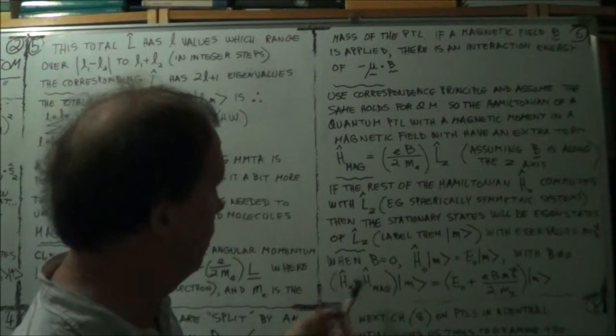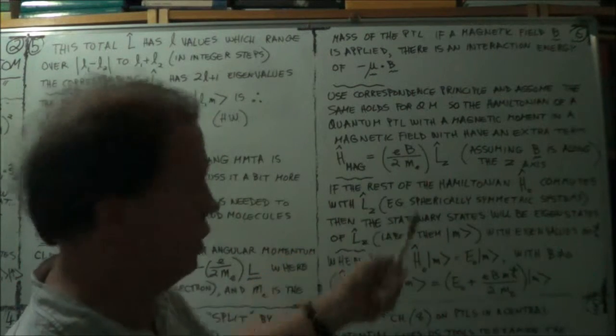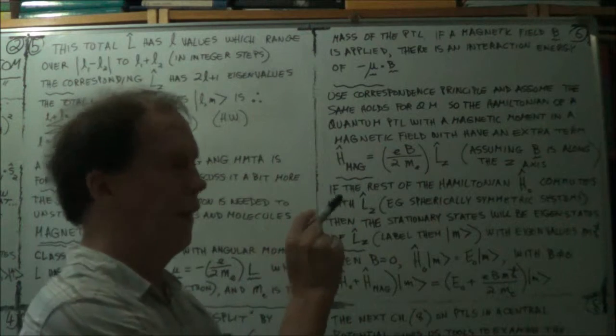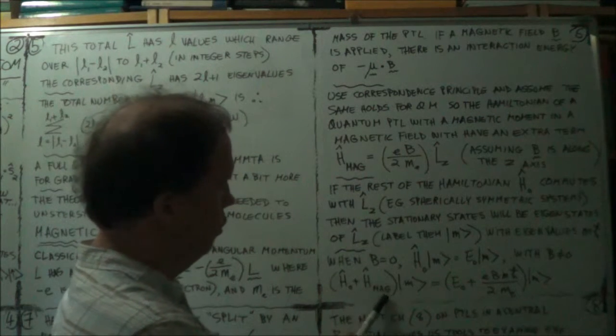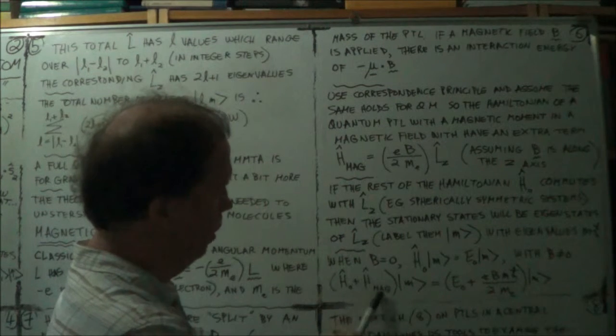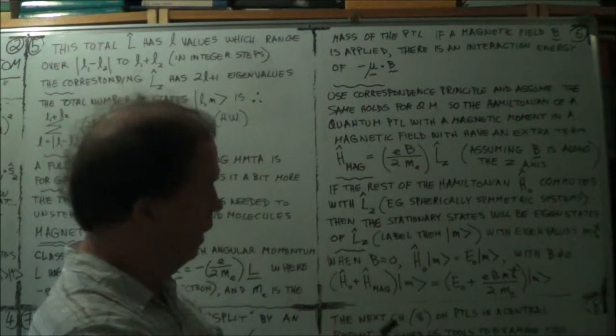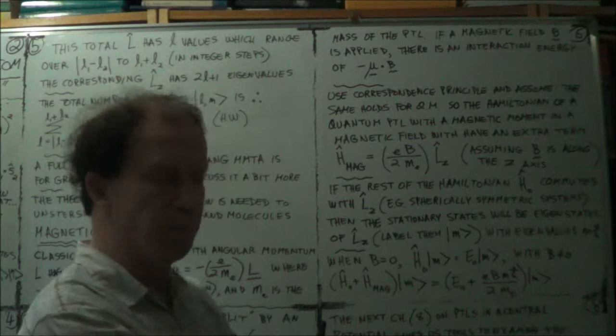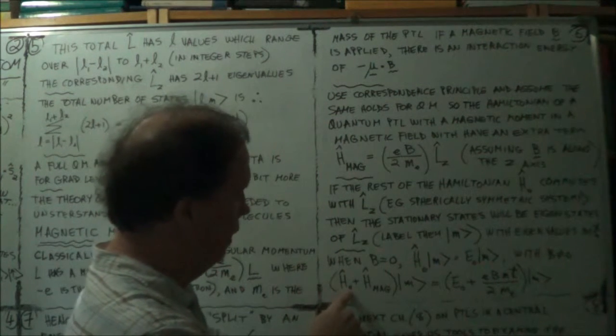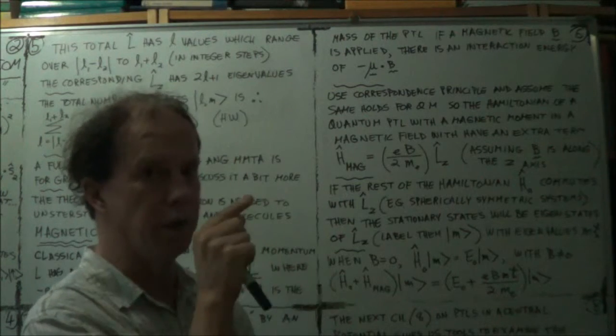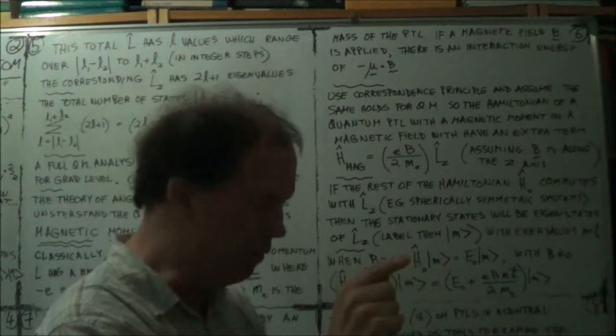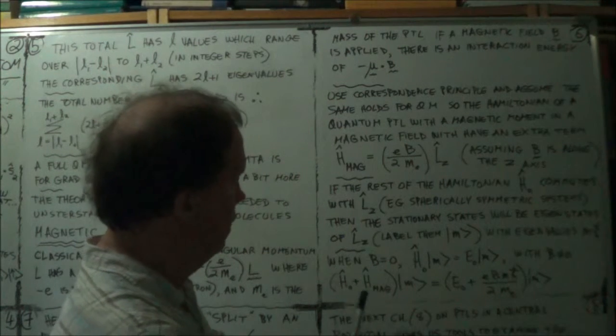E_naught. But when your B is non-zero, when you switch it on, you get like this additional term in the Hamiltonian, H_mag. Now, if that's sort of small, in a sense, compared to this one, you can look on this as just a perturbation. You're, in a sense, perturbing this Hamiltonian here. A perturbation is just a small disturbance. A small change in.